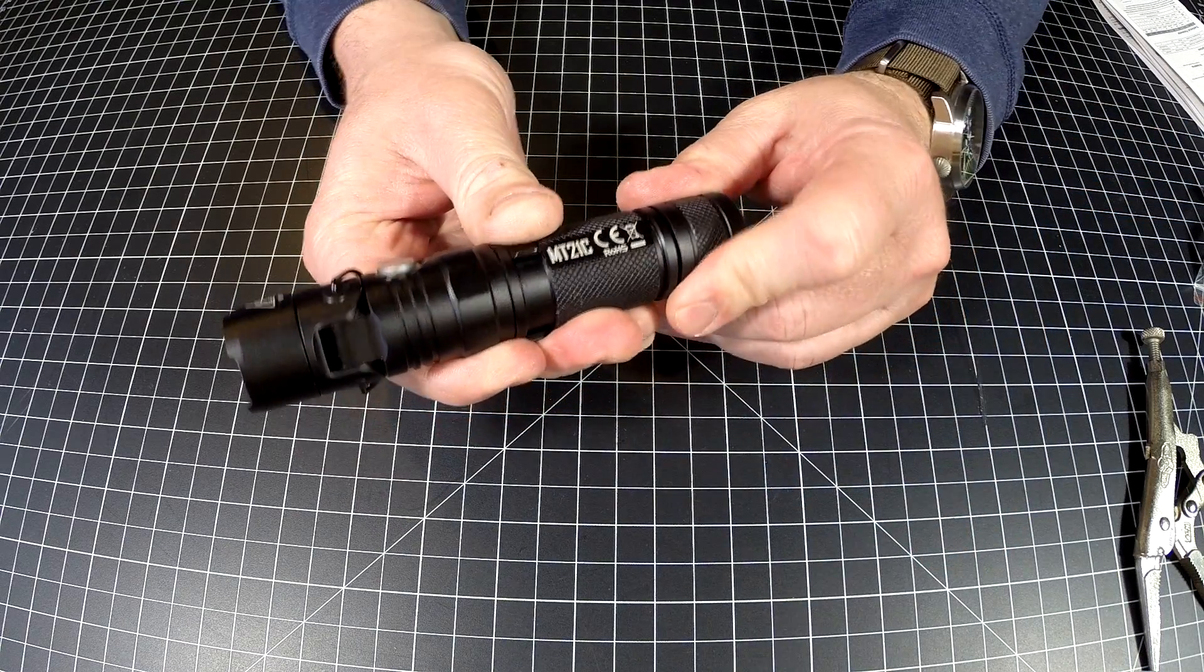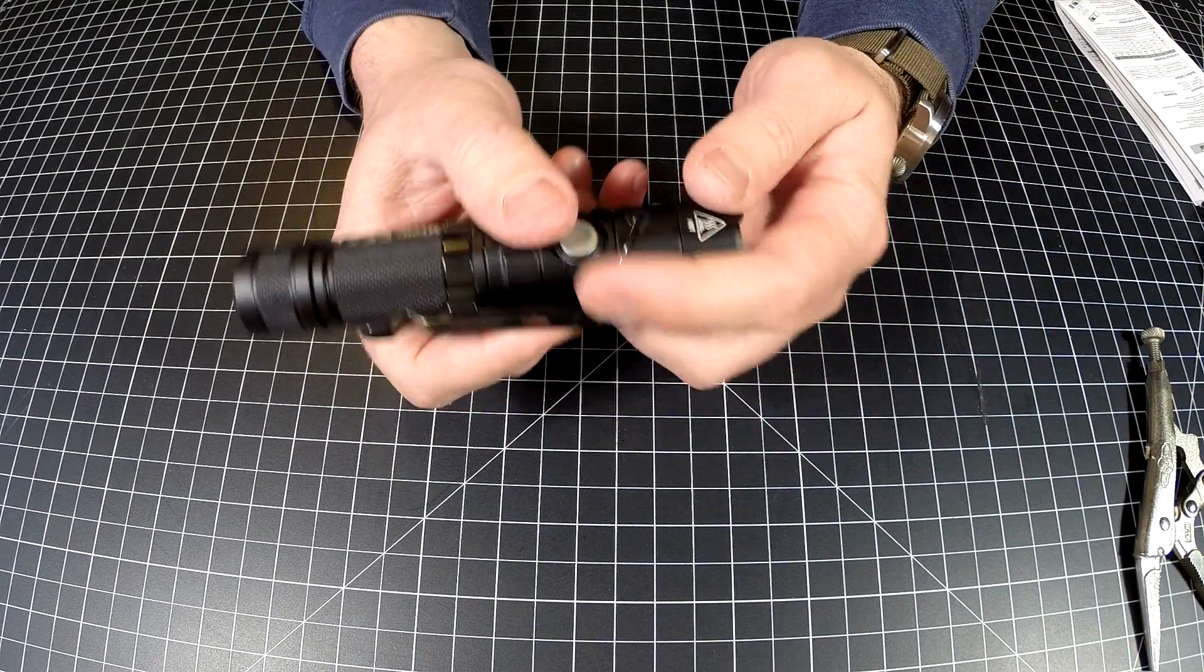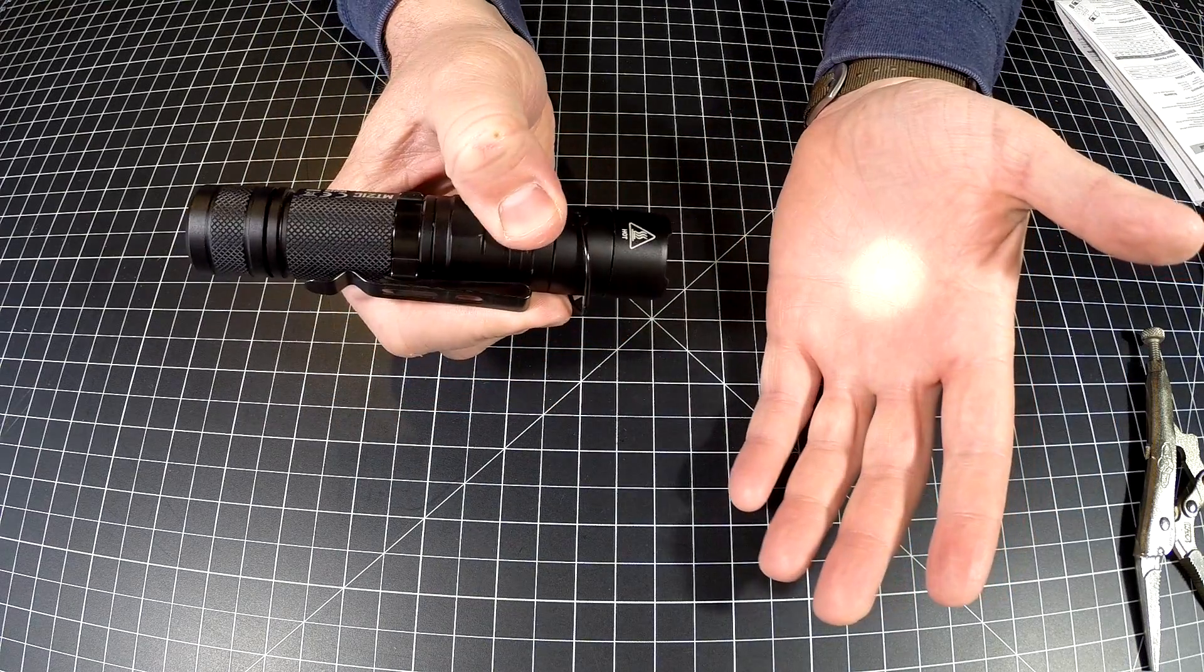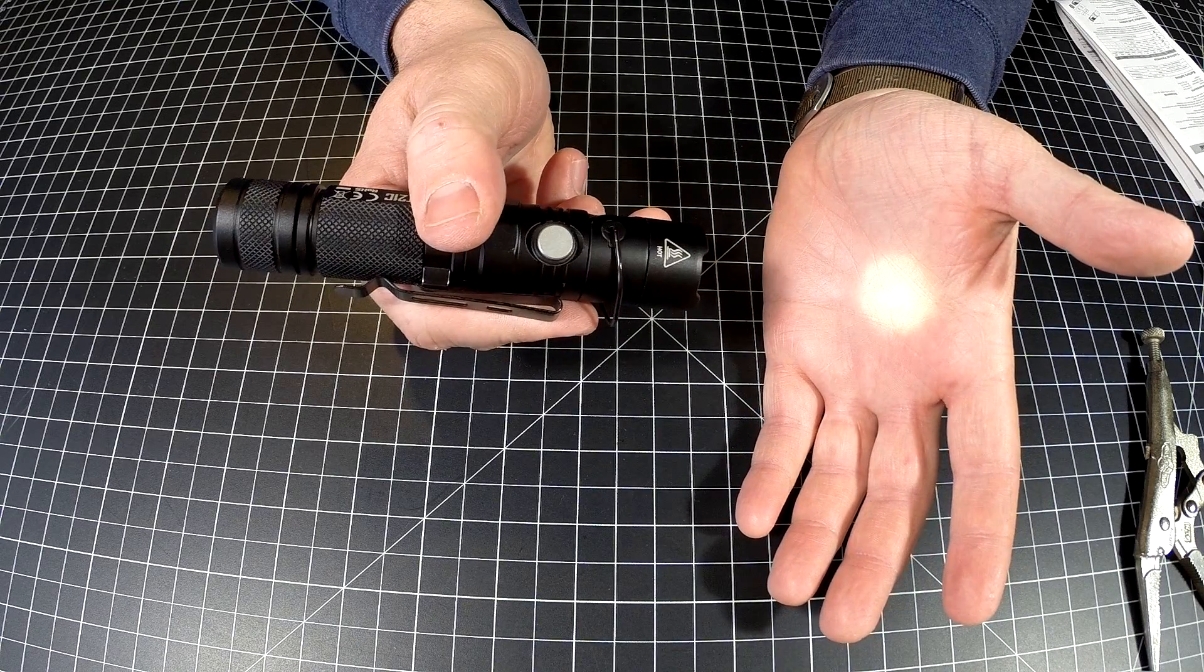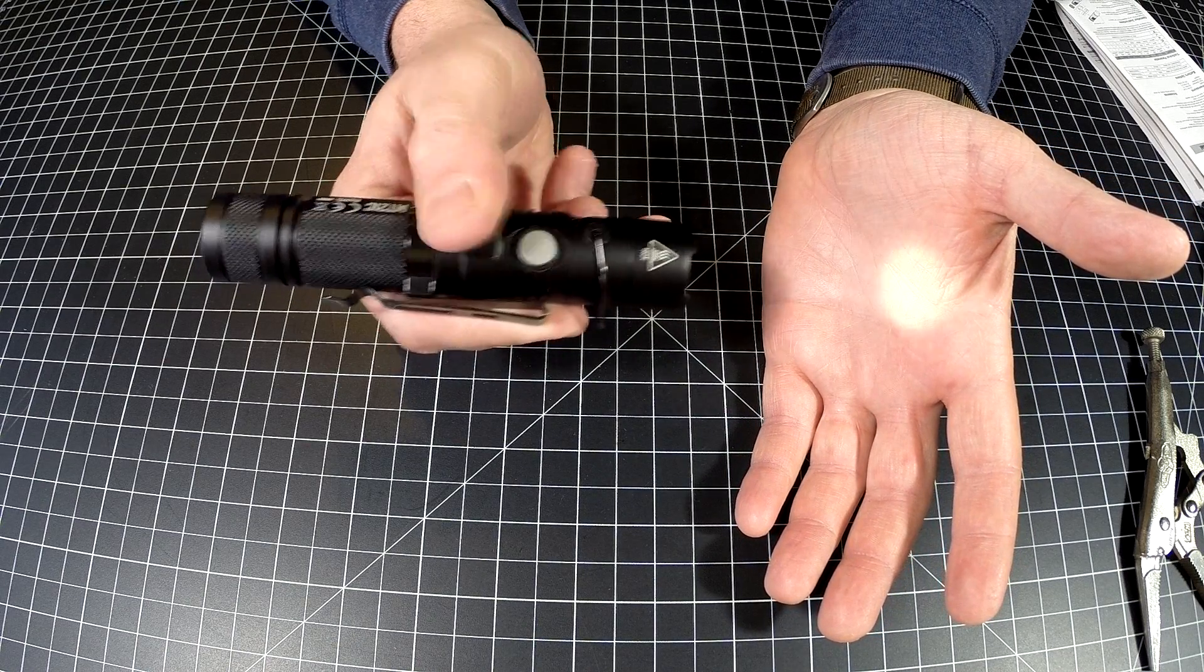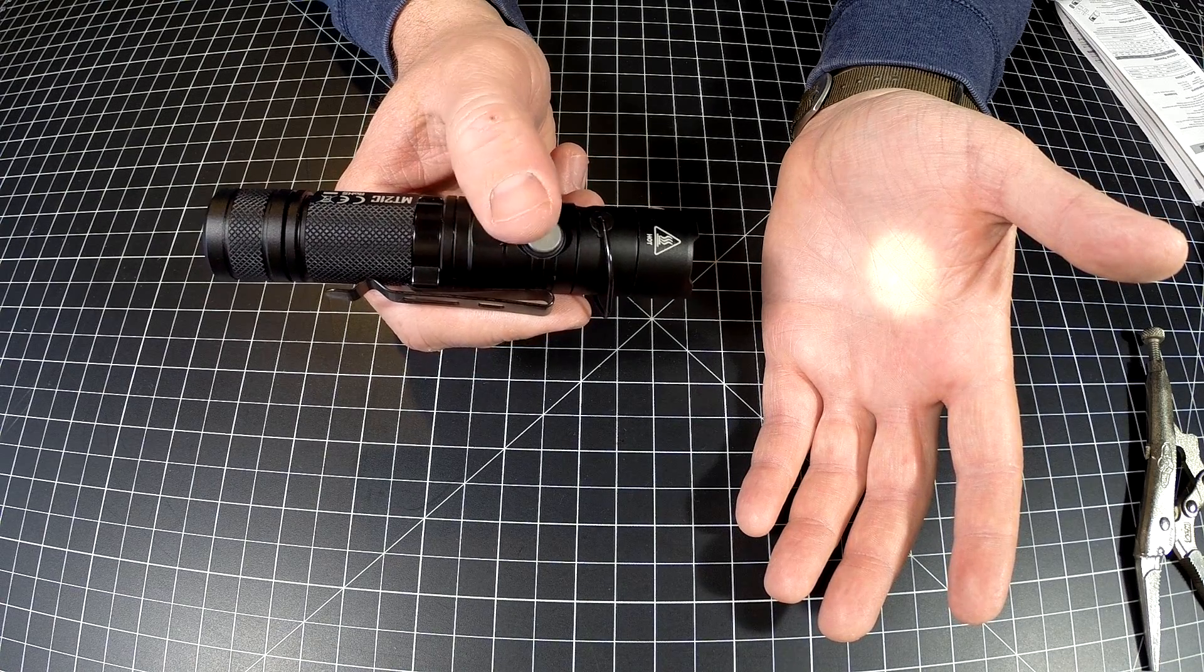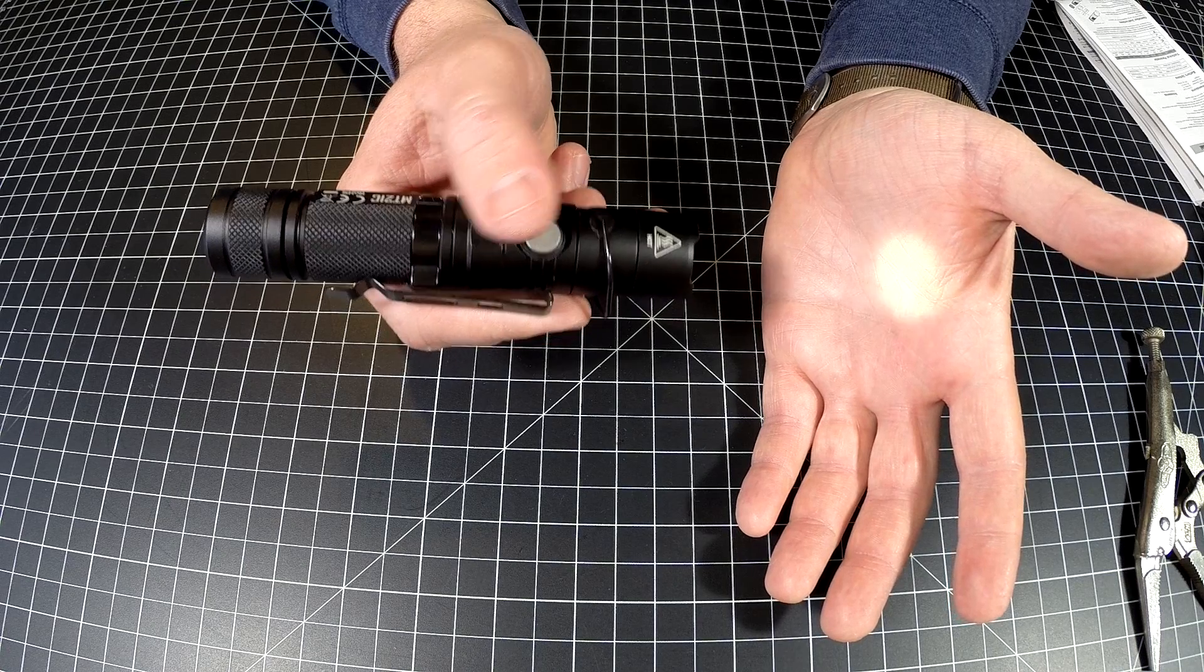Let's go over the settings. Push and hold turns the light on, and push and hold turns it off.